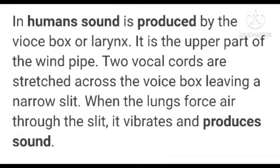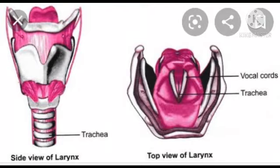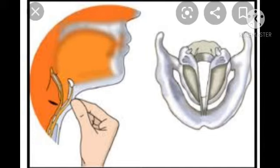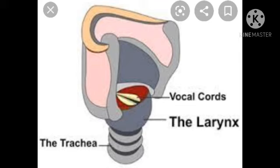In human beings, the vibration of the voice box or larynx produces sound. Air passes through the vocal cords attached to the larynx, causing them to vibrate, which enables us to produce sound. The larynx is situated at the upper end of the windpipe. The shape and size of the vocal cords are responsible for different people sounding differently. The length of the vocal cord differs in men, women, and children, and hence their voices are also different from each other.